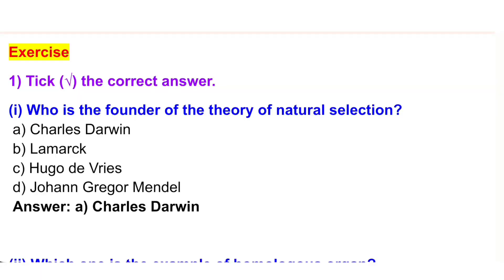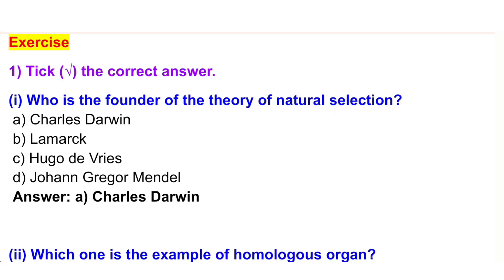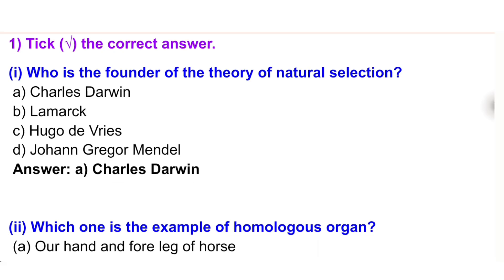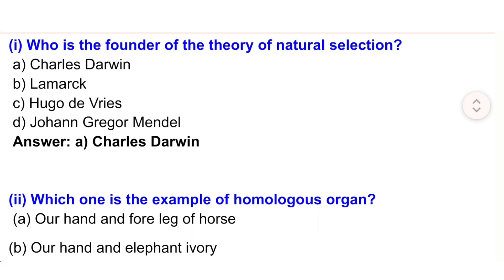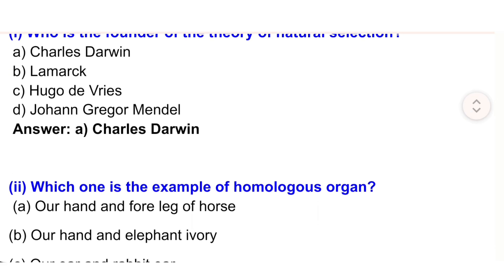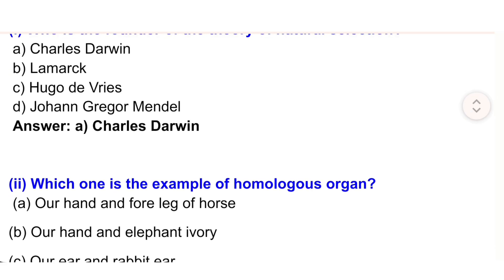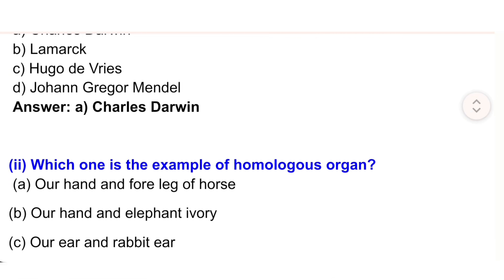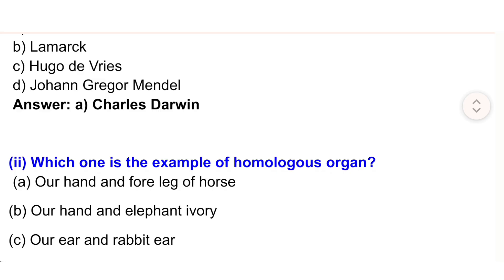Exercise one: tick the correct answer. Who is the founder of the theory of natural selection? A) Charles Darwin, B) Lamarck, C) Hugo de Vries, D) Johan Gregor Mendel. Answer: A) Charles Darwin.